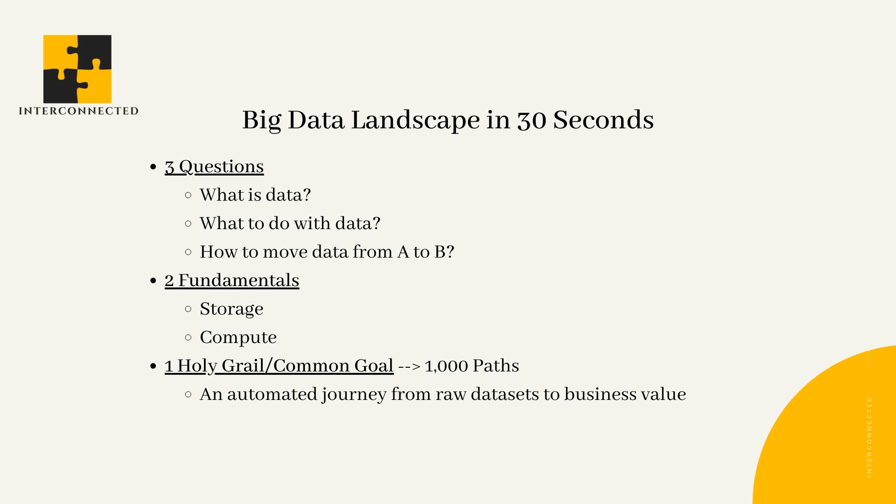The one holy grail — the common goal every company wants to achieve — is an automated journey that takes raw data sets and turns them into business value. In the pre-web days when data fit comfortably in Excel spreadsheets, this was easy. Now we're drowning in billions of YouTube video watch events being collected, parsed, aggregated, and turned into a single dashboard on an hourly basis. While the end goal is common, there are literally a thousand paths to reach this holy grail, and cloud giants like AWS, Azure, and GCP are all attempting to build all-in-one services.